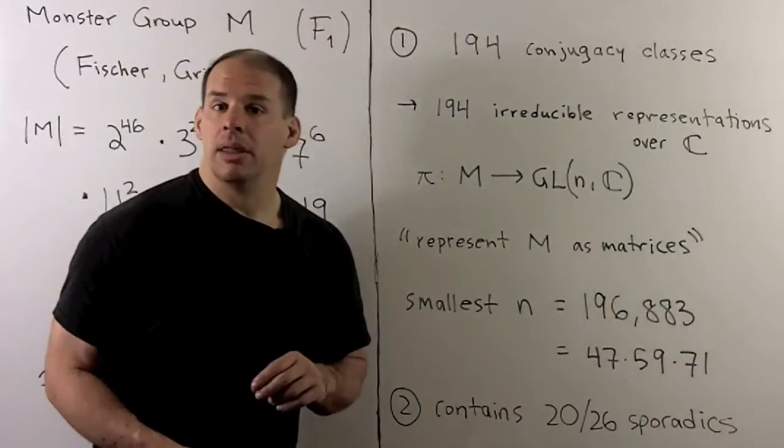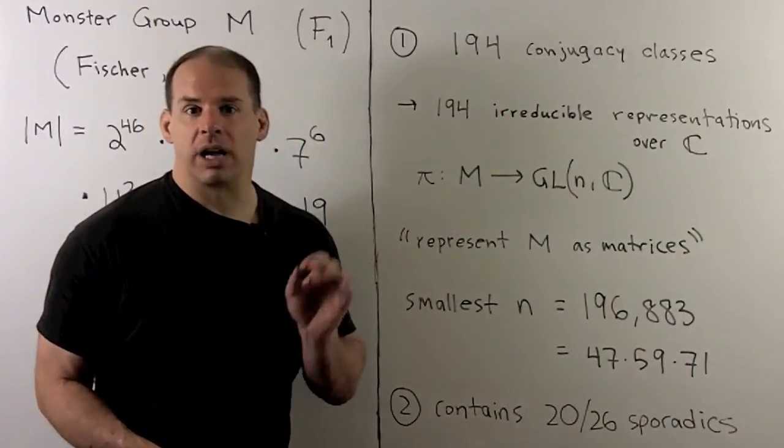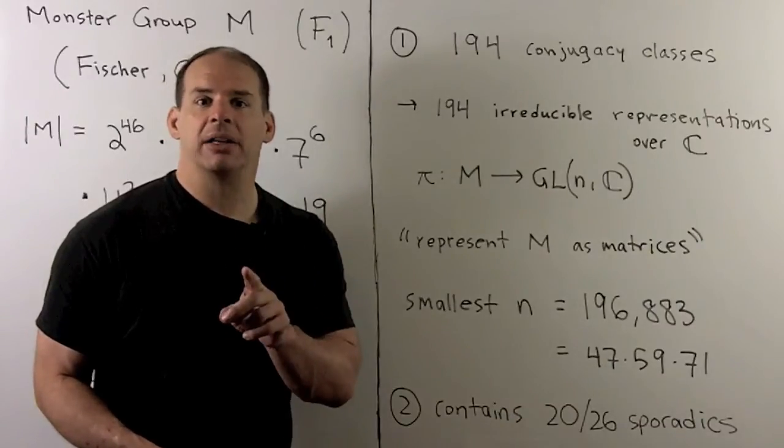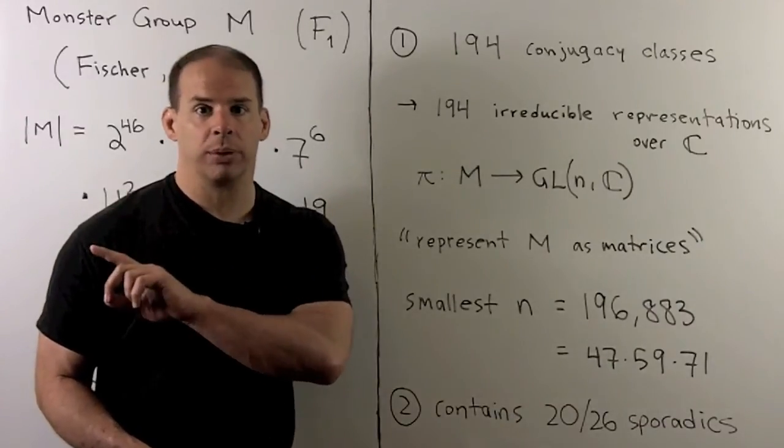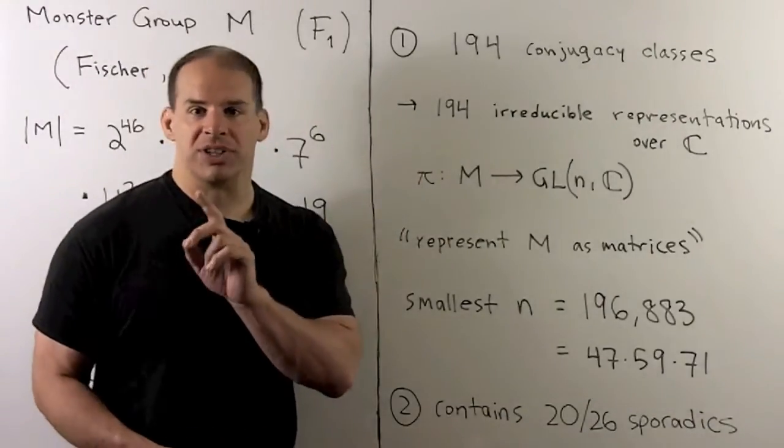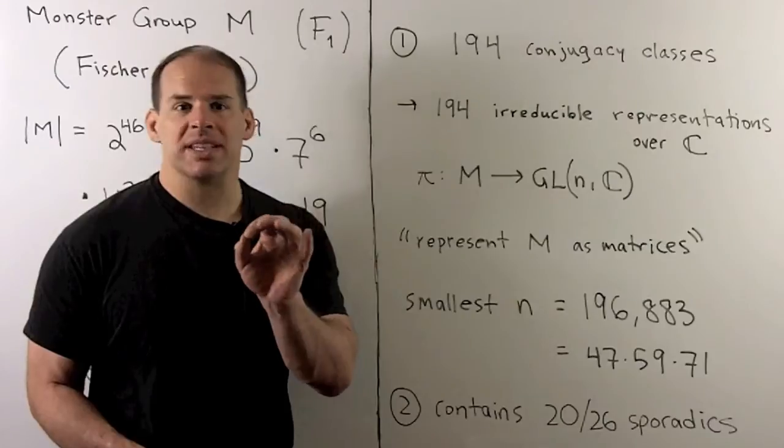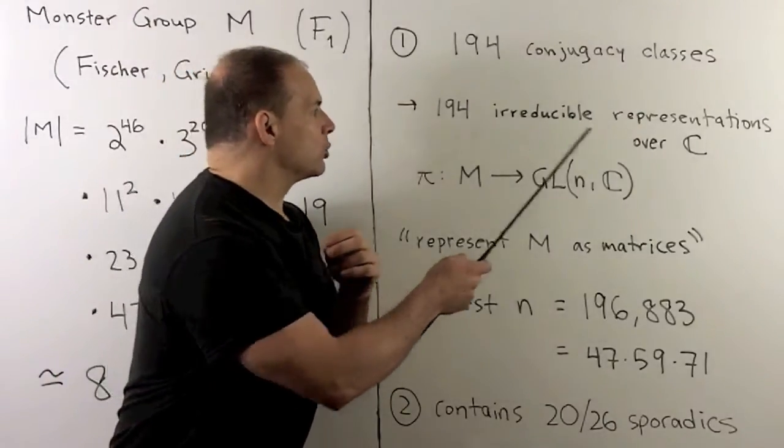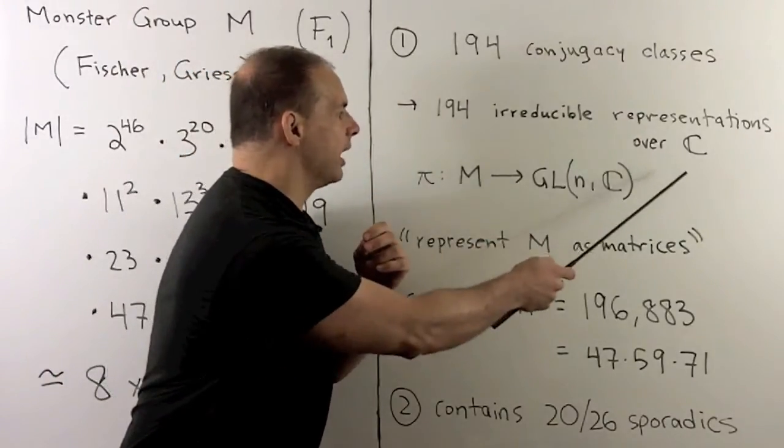First, the monster group has 194 conjugacy classes. So this isn't bad compared to the size of the group. Now, if we had some representation theory, this would say that there are 194 irreducible representations over the complex numbers.